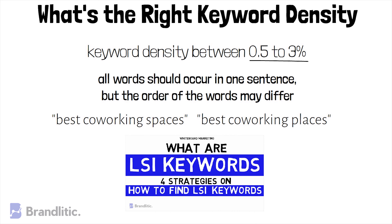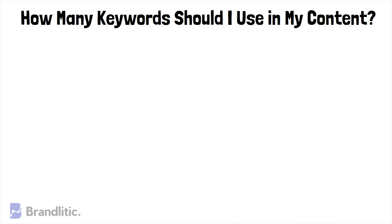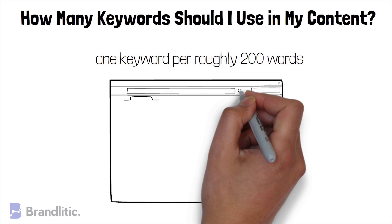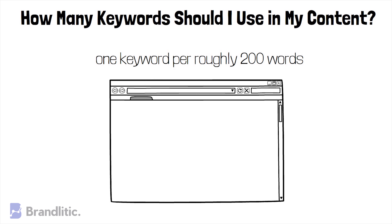I'd recommend watching my video on LSI keywords for a better understanding — the link is in the description below. As for how many keywords to use in your content, while there are no hard and fast rules, based on my experience I recommend including one keyword per roughly 200 words of copy. If a webpage consists of a 200-word paragraph, it should contain no more than one keyword. Roughly one keyword per 200 words is considered a good benchmark by the SEO community.